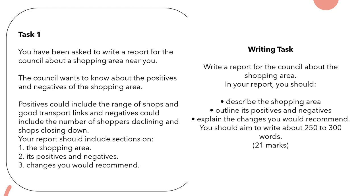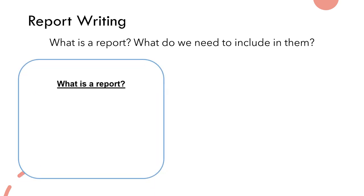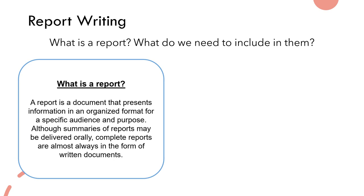What is a report and what do we need to include in them? Simply put, a report is a document that presents information in an organised format for a specific audience and purpose. Although summaries of reports may be delivered orally, complete reports are almost always in the form of written documents. These are really good things to practice in terms of developing your skills for the workplace — if you do have to write a report, these are the kind of skills that will help build that for you.